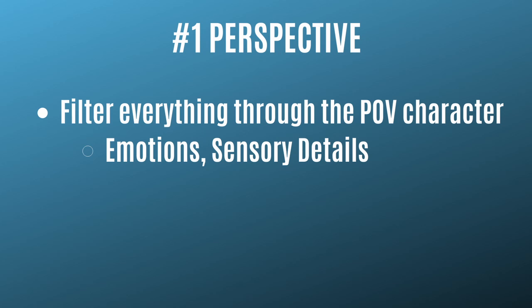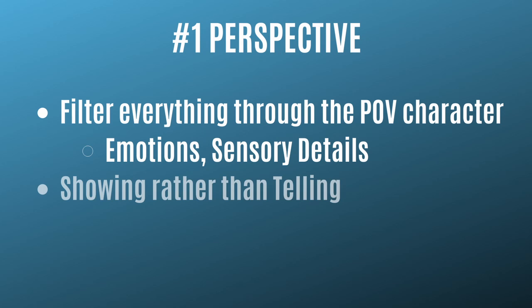We experience what the character experiences. This is where you want to hammer those five senses. If your character is aching and sore, mention that. If your character tastes something in the air, mention it. Another thing to keep in mind with character perspective is that you're going to be showing rather than telling.